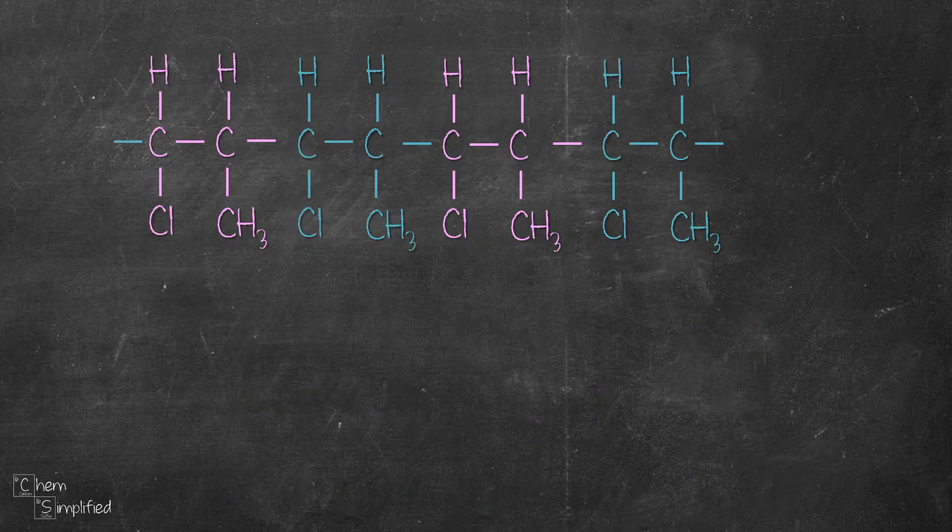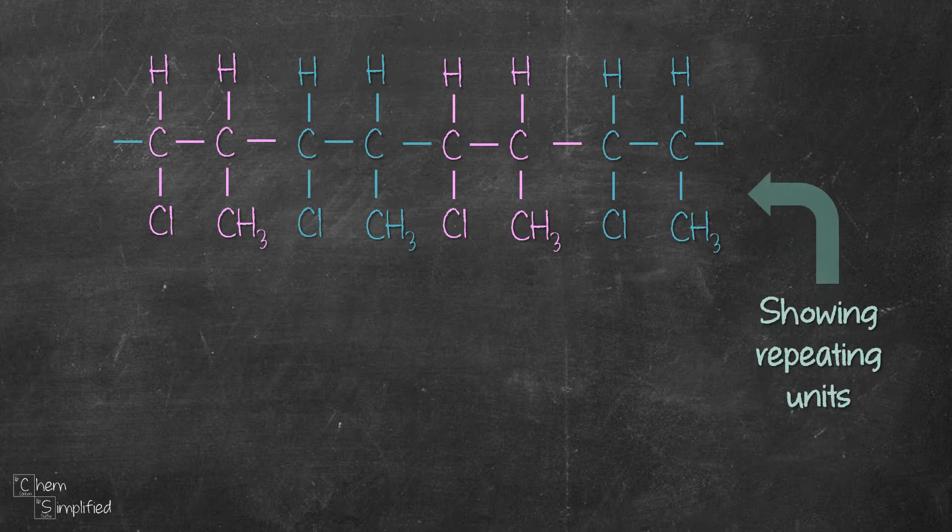Once we link them up, we have the structure of the polymer showing repeating units. Important point to note. When drawing polymer, make sure that both ends of the structure have open-ended bonds like this. This is to note that there are lots of monomers linked up, it's just that we didn't draw them out.